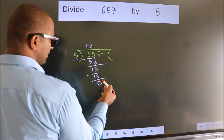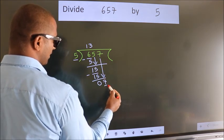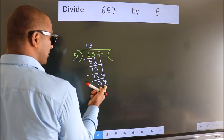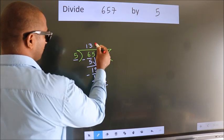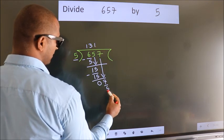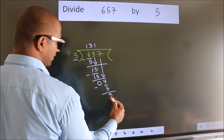After this, bring down the beside number. So, 7 down. So, 7. A number close to 7 in the 5 table is 5 times 1. Now we subtract. We get 2.